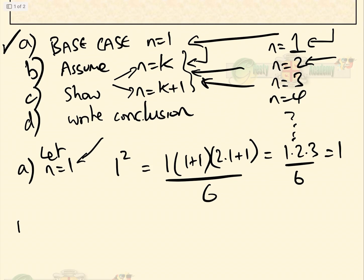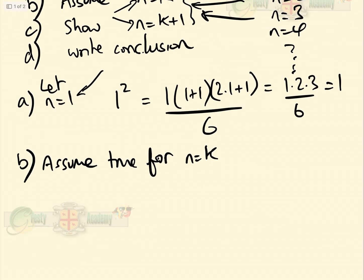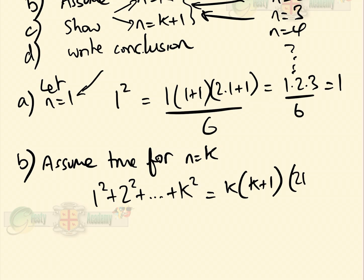Now for the second part: assume it's true for n equals k. So we're assuming that 1² + 2² + ... + k² equals k(k+1)(2k+1) over 6. We're assuming that is correct.